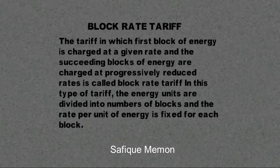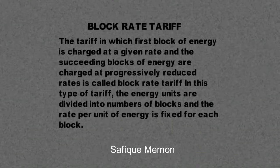Block rate tariff: The tariff in which the first block of energy is charged at a given rate and the succeeding blocks of energy are charged at progressively reduced rates is called block rate tariff. In this type of tariff, the energy units are divided into a number of blocks and the rate per unit of energy is fixed for each block.